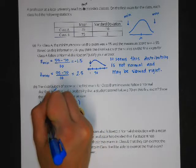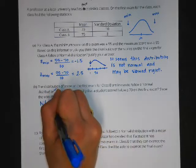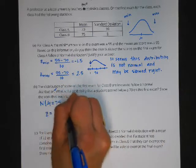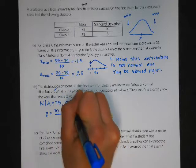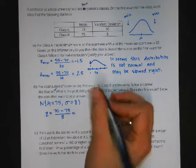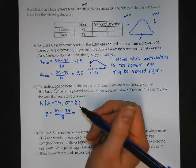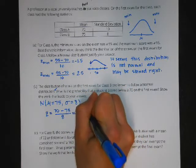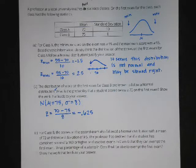If I calculate the associated z-score, that would be 70 minus 75 all over 8. I should get a negative z-score because 70 is below 75, and I do. I get negative 0.625.